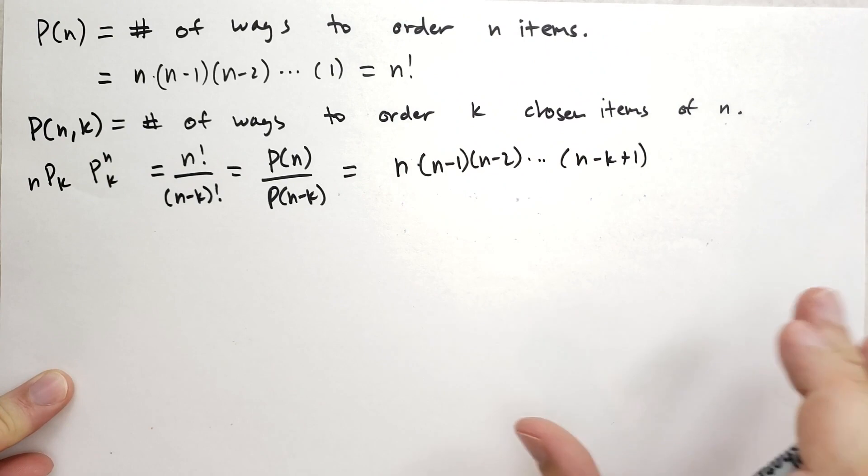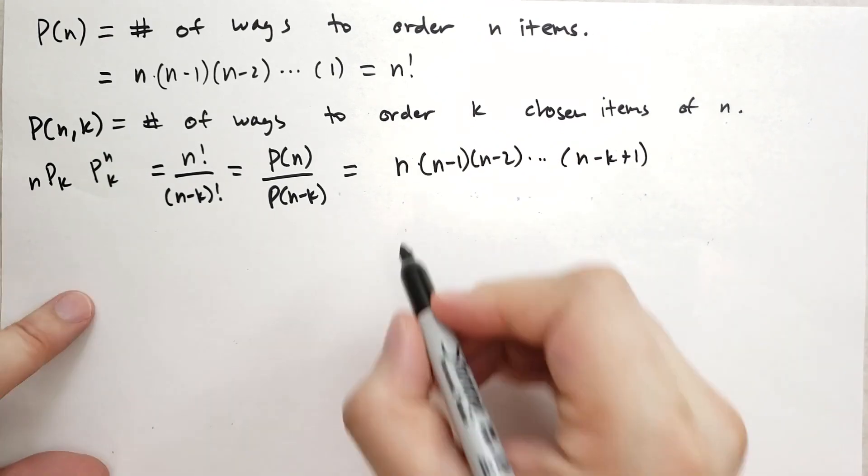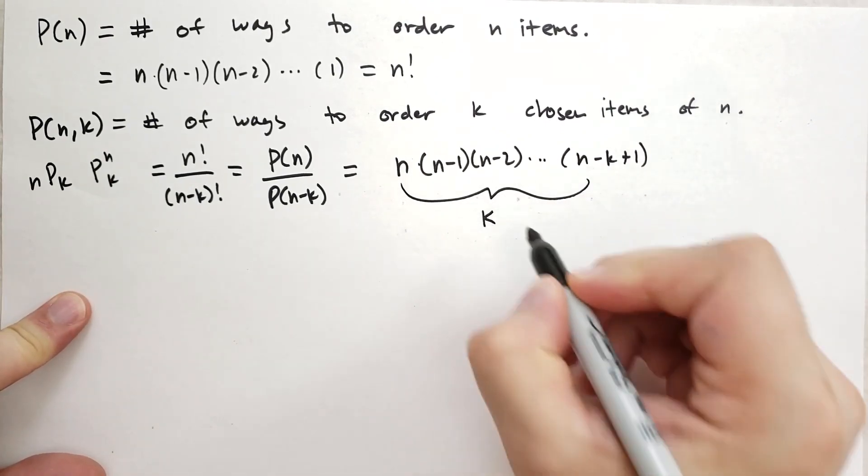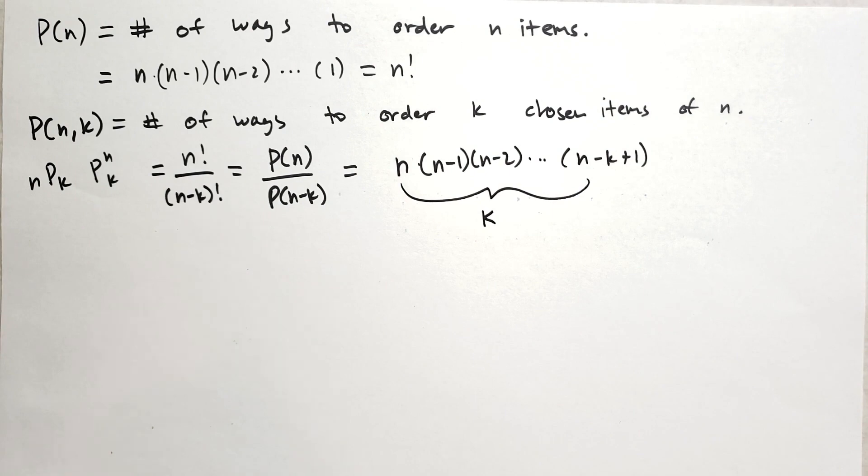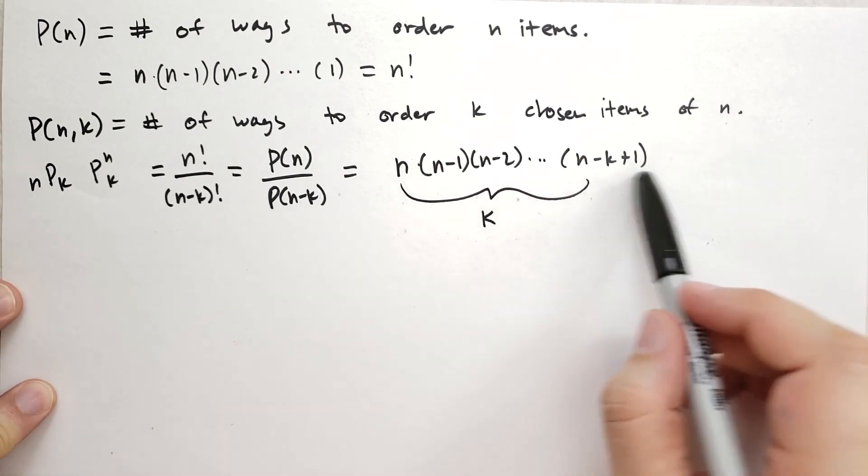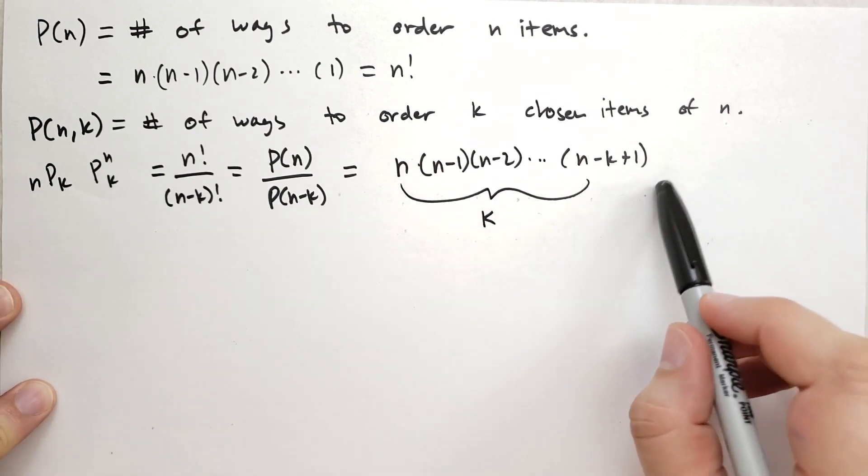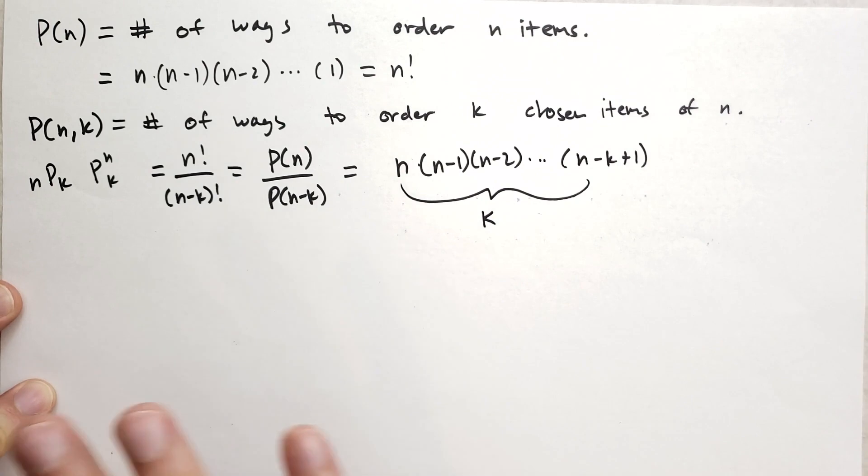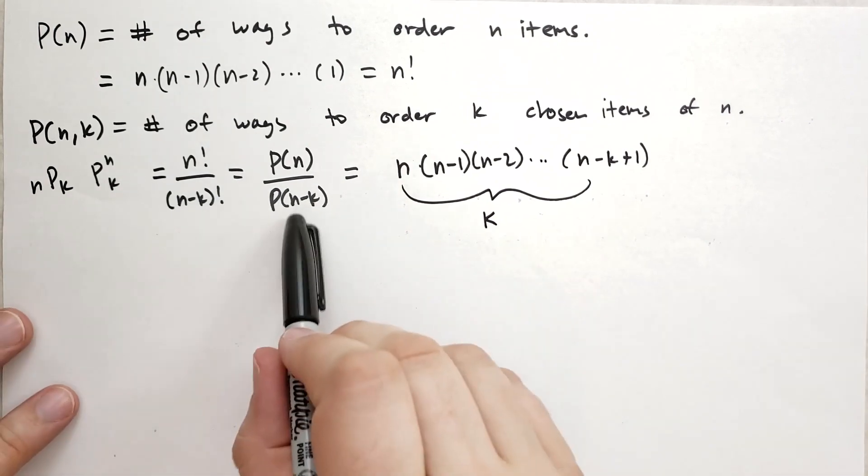After that, there's no more, you've already chosen K items. So there are K terms here, not N terms. So we're not going all the way down to 1. And so that's kind of like the partial factorial. And so one way we can represent that is just divide out the rest of the terms, the N minus K, N minus K minus 1, N minus K minus 2, all the way down to 1. And so that's what that's doing.